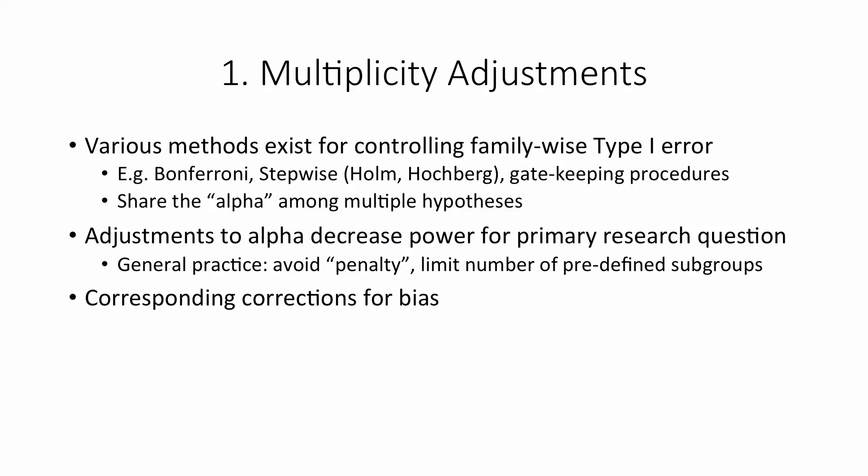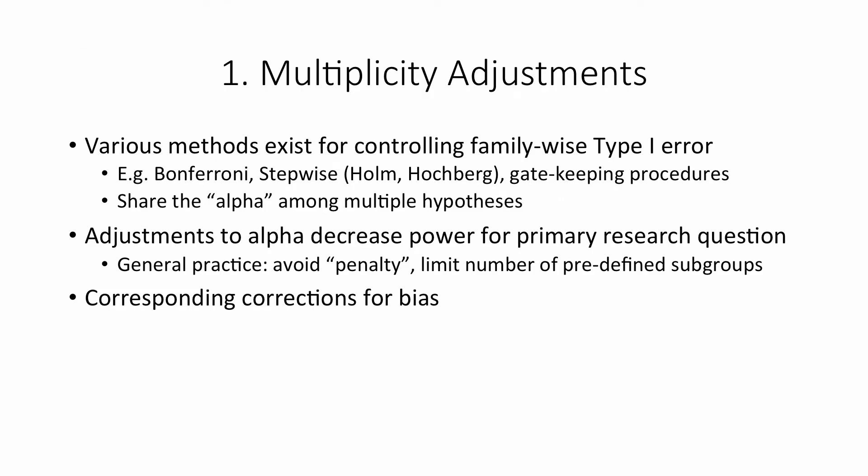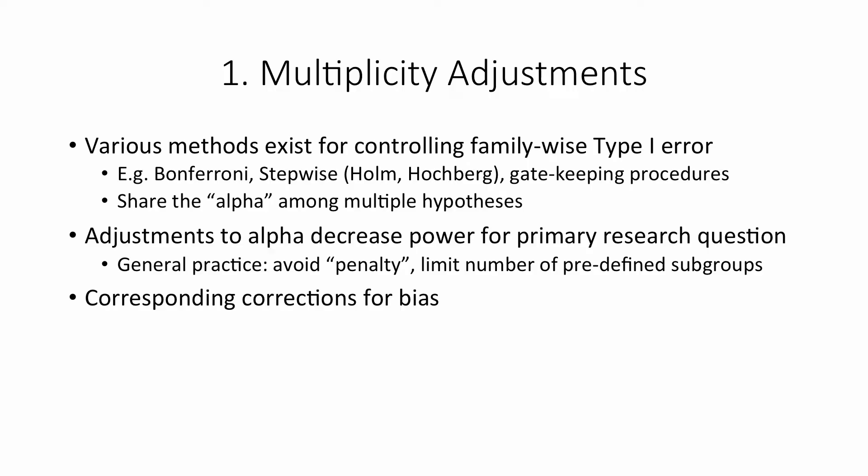I'd like to walk through four different strategies helpful for pre-specified analyses. The first is multiplicity adjustments. There's a range of methods for controlling the family-wise type 1 error: the Bonferroni correction, stepwise procedures such as Holm and Hochberg, and gatekeeping procedures where you only proceed to subsequent hypotheses if you win the higher-order hypotheses. The idea is we share the alpha among multiple hypotheses, but this typically decreases power for the primary research question, which is undesirable. Because of that, many people limit the number of predefined subgroups in a trial.